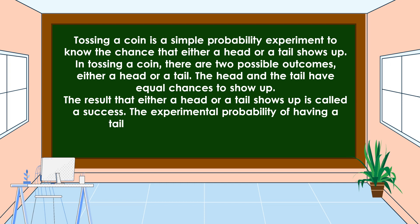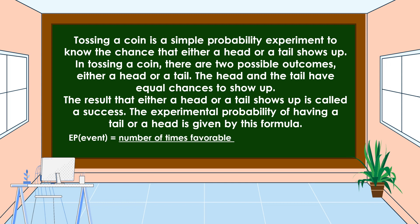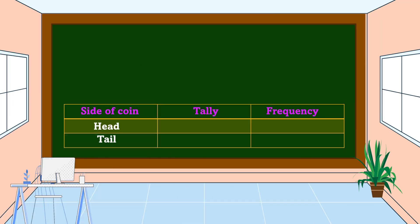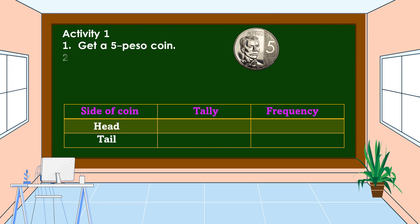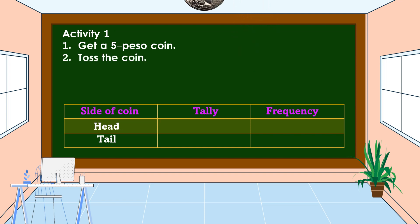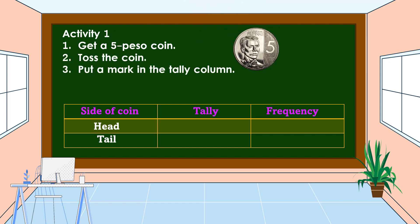The experimental probability of having a tail or a head is given by this formula. Experimental probability (EP) of an event is equal to the number of times favorable outcomes occur divided by the number of trials in the experiment.